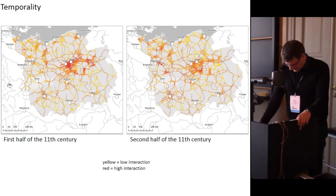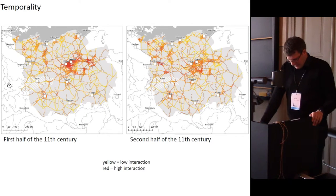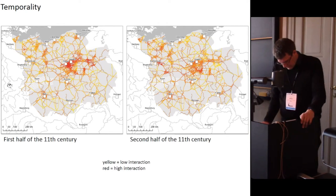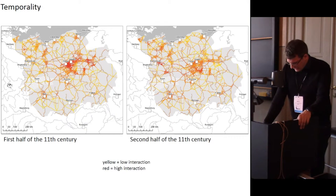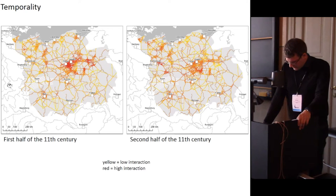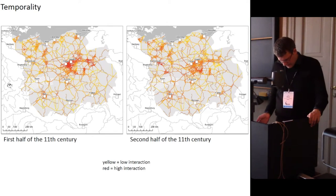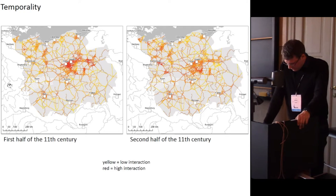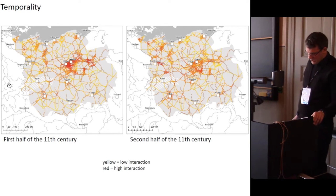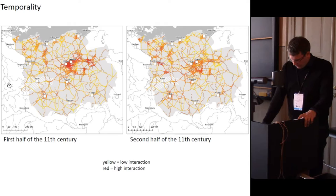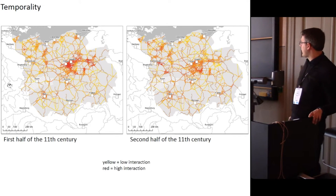Another question that arises with such networks is the aspect of temporality. In the case of networks based on coin hoards, chronological dynamics can be established easily by dating the depositions using the respective youngest coin. Dividing the 11th century into two equal periods, you can see, for example, that considerably more exchange relations are shown in the region of Poznań and Gniezno in the first half of the 11th century than in the second. Simultaneously, one can see that the activities around Kraków increase in the course of time. This change can be correlated to written sources: in the year 1038, Casimir the Restorer, the Duke of Poland, relocated his seat from Greater Poland to Kraków.